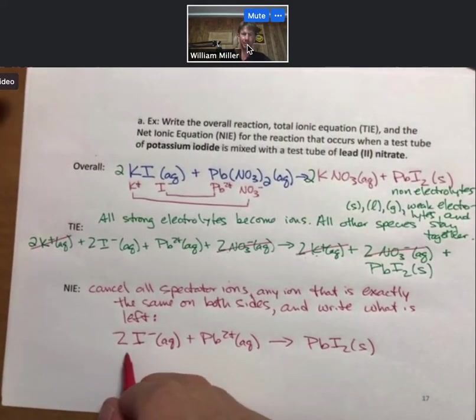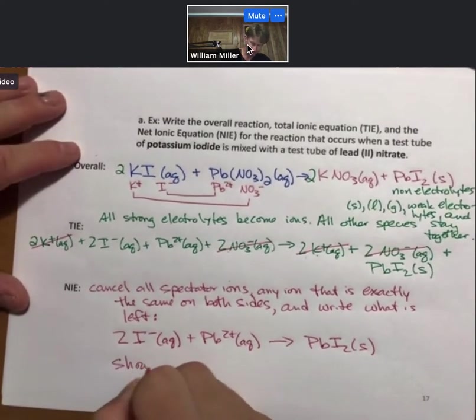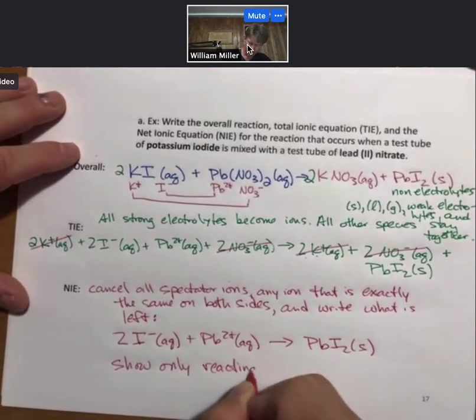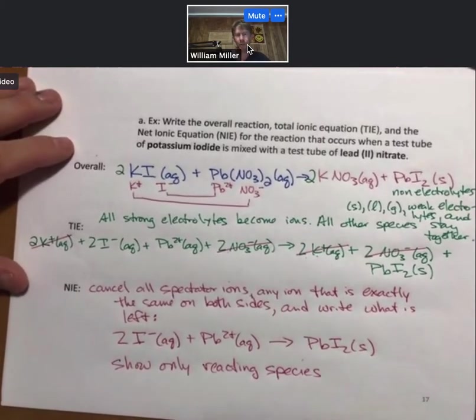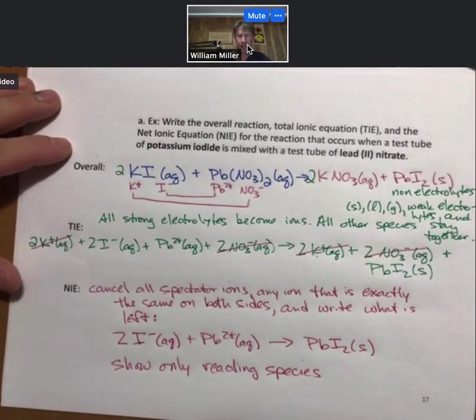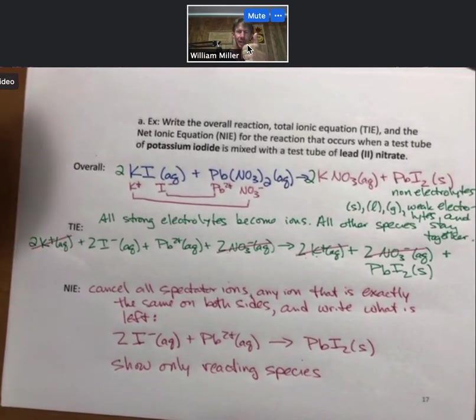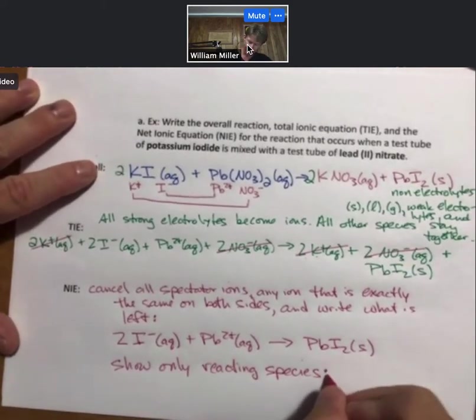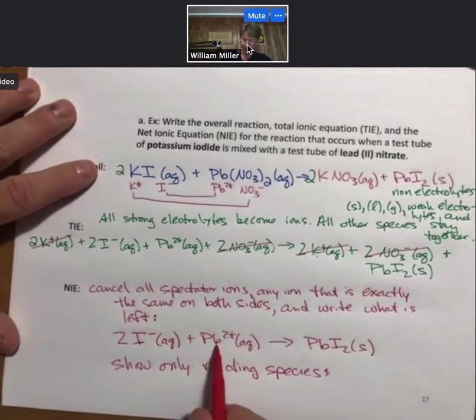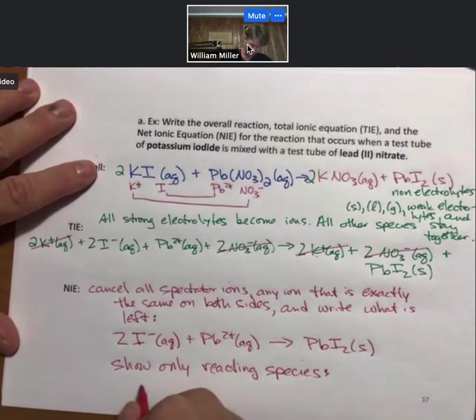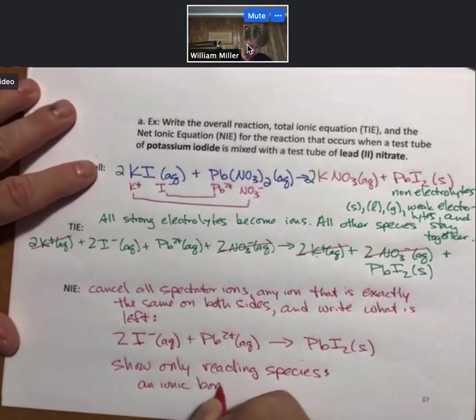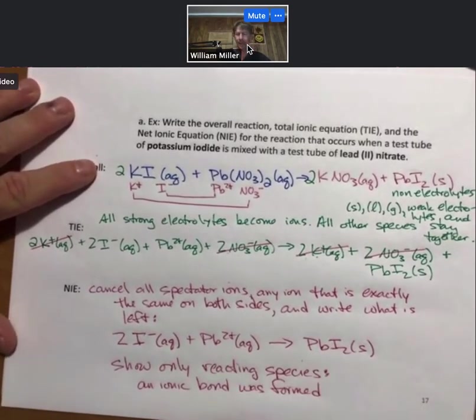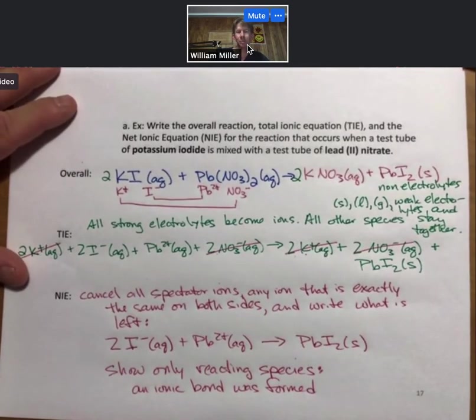Now, the net ionic equation, the point of it is we show only the reacting species. And we can ask the net ionic equation what reaction happened, if any, and what kind of bonds were made. Because the definition of a true chemical reaction is that either bonds were made, bonds were broken, or both bonds were made and broken. And so it shows only the reacting species. And we can show that as iodide and lead 2 came together, an ionic bond was formed. And this is a very nice example of a chemical reaction, a double replacement reaction.